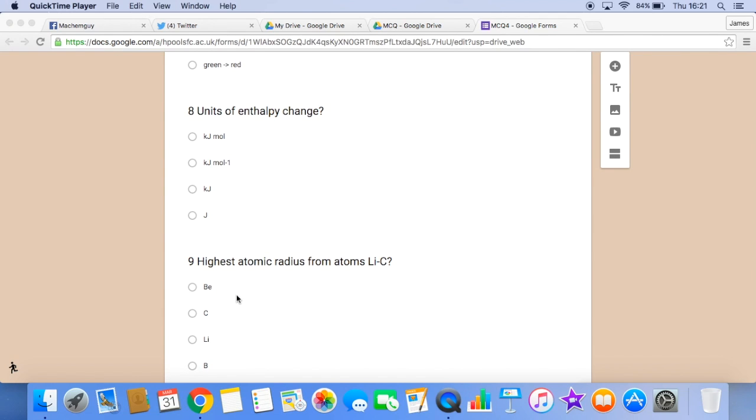Number 9. Which has the highest atomic radius from the atoms lithium to carbon? Well, it's the one furthest to the left in the period. These are all in the same period. Period 2. And so the answer is lithium.